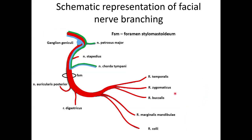This schematic representation of facial nerve branching will help us to understand that the most part of the facial nerve is a motor nerve, and only two very important but small branches of it — Nervus Chorda Tympani and Nervus Petrosus Major — are parasympathetic and also sensory branches.